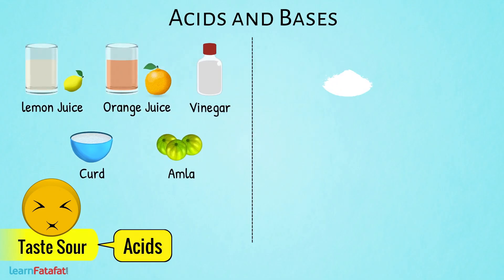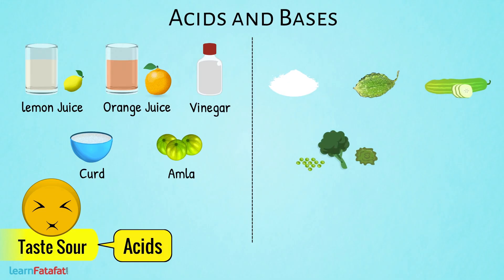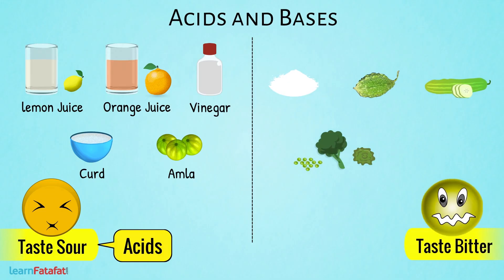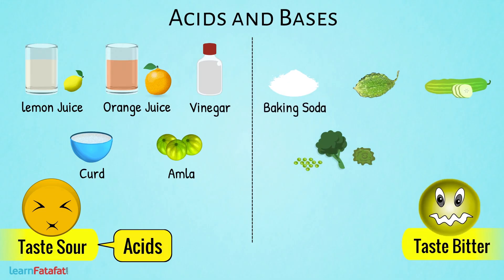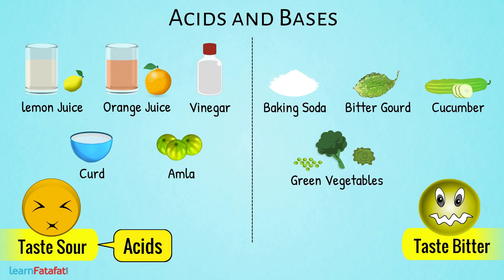There are other substances which taste bitter. For example, baking soda, bitter gourd, cucumber, green vegetables, etc. Such substances are bases.